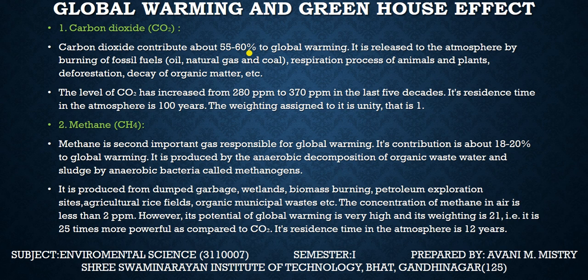The next one is methane. Methane is the second most important gas responsible for global warming, with a contribution of about 18 to 20%. It is produced by anaerobic decomposition — that means decomposition in the absence of oxygen — of organic waste, water, and sludge by anaerobic bacteria called methanogens. It is also produced from dumped garbage, wetlands, biomass burning, petroleum exploration sites, agriculture, rice fields, and organic municipal waste.